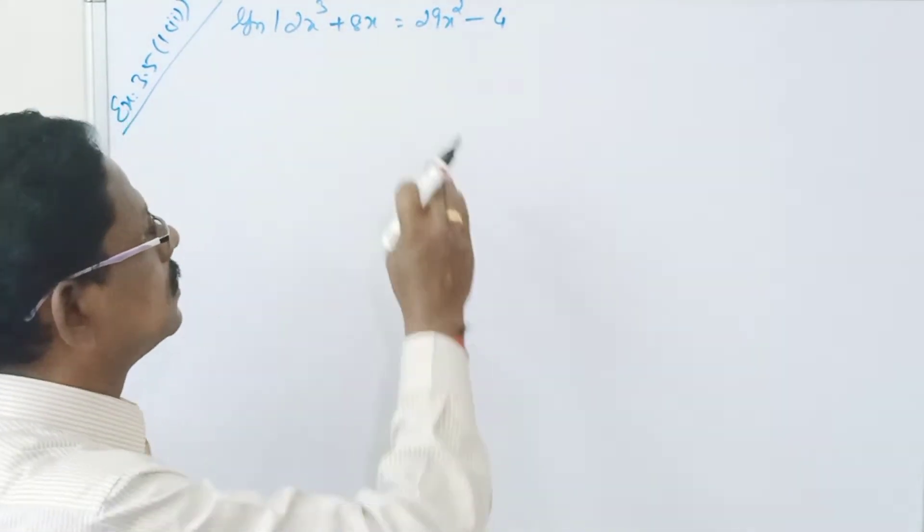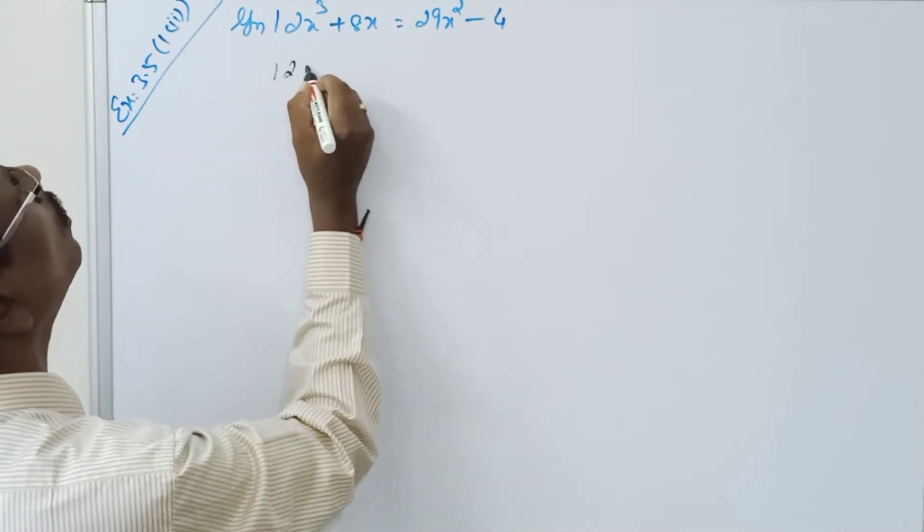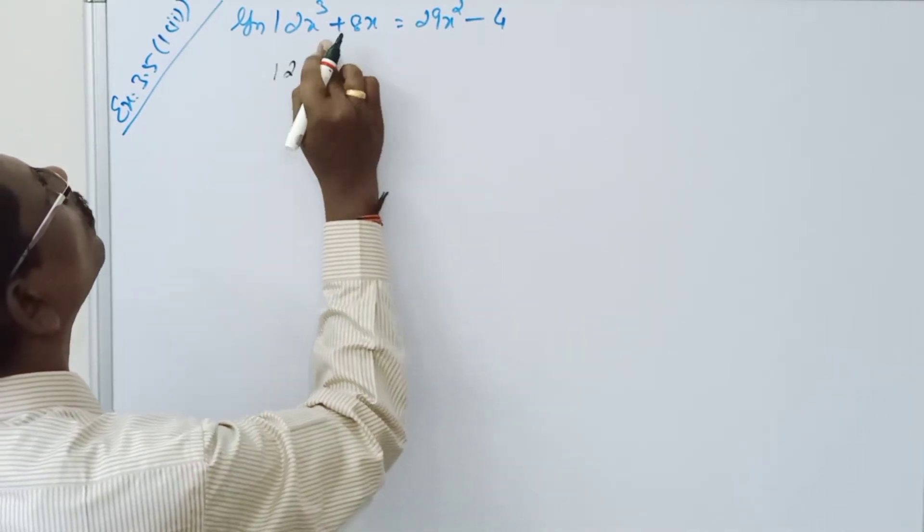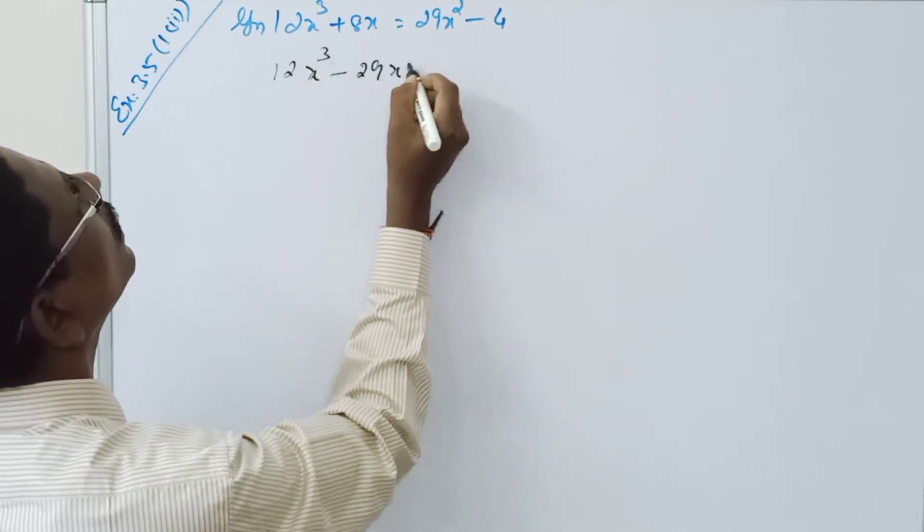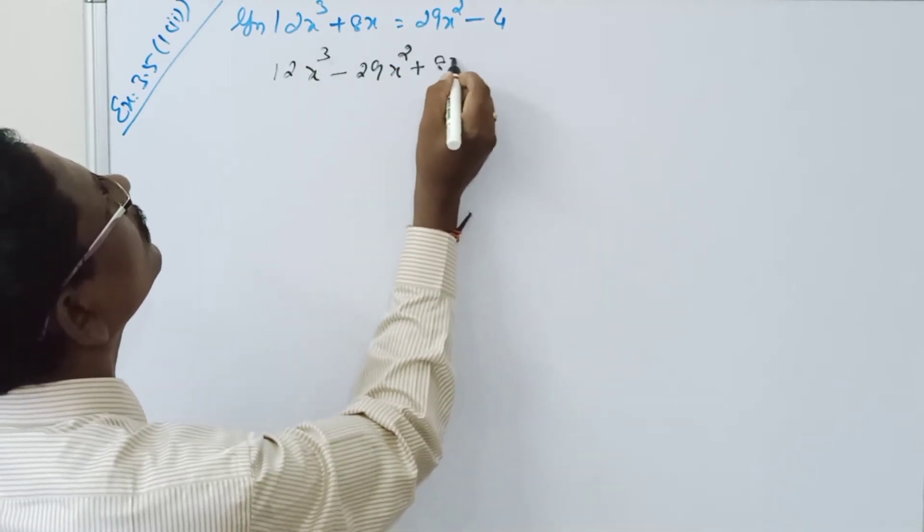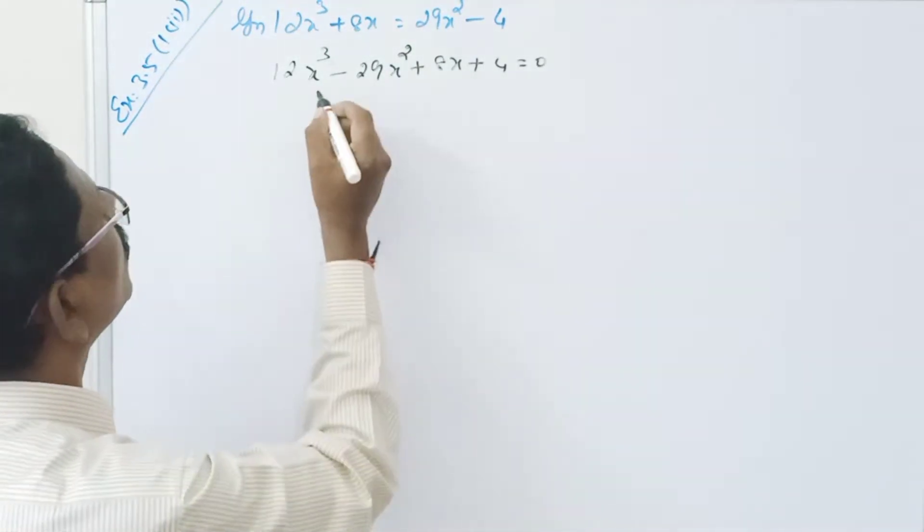Welcome to MercuryMass. Solve this equation. Write this as 12x cube minus 29x square plus 8x plus 4 equal to 0. By synthetic division: